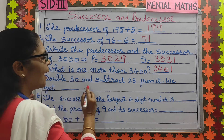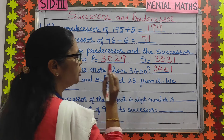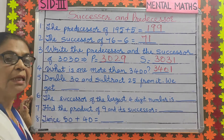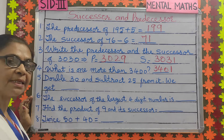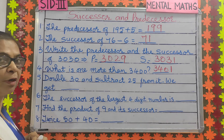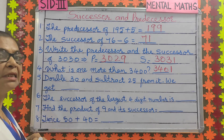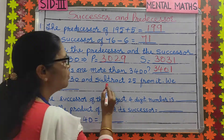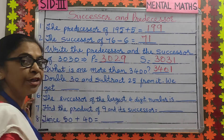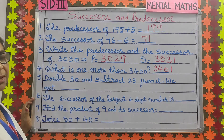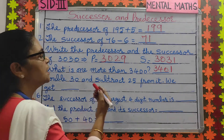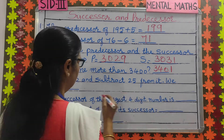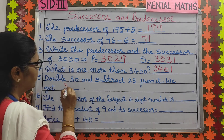Number 5: double 30 and subtract 25 from it. Double 30 means 30 plus 30. What will you get? 60. 30 plus 30 is 60. Now subtract 25 from it. 60 minus 25 is 35.